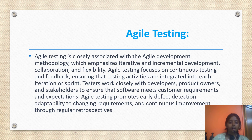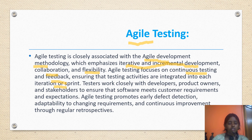Moving on to the next slide, which talks about agile testing — our second kind of model. Agile testing is closely associated with agile development methodology, which emphasizes iterative and incremental development, collaboration and flexibility. Agile testing focuses on continuous testing and feedback, ensuring that testing activities are integrated into each iteration or sprint. Testers work closely with developers, product owners and stakeholders to ensure that software meets customer requirements and expectations. Agile testing promotes early defect detection, adaptability to changing requirements and continuous improvement through regular retrospectives.